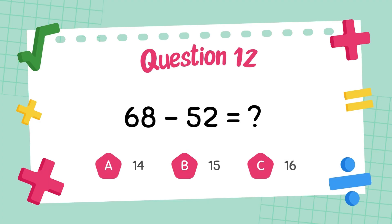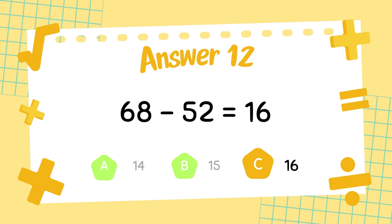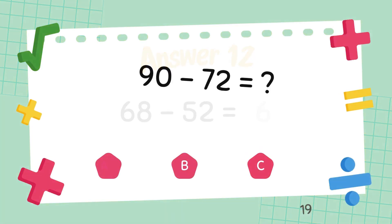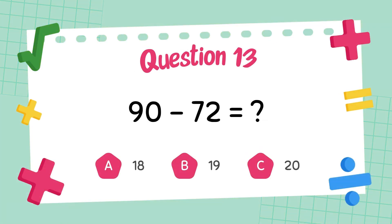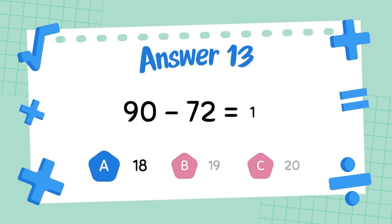What is 68 minus 52? The answer is 16. What is 89 minus 72? The answer is 18.